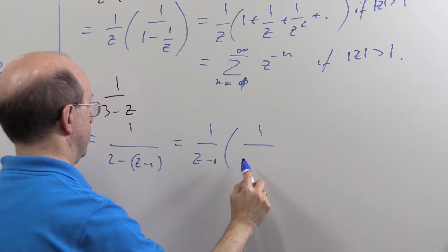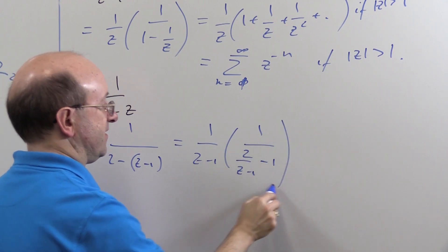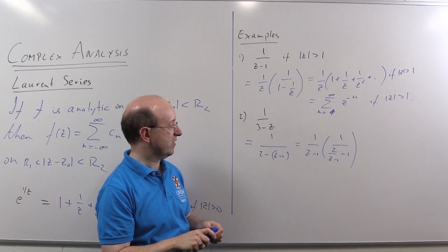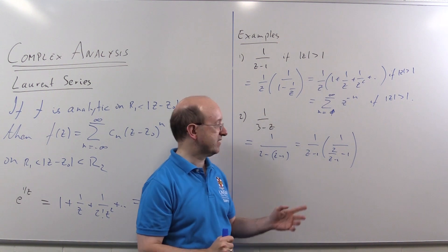Into 1 over 2 over z minus one minus one. I want to expand in powers of 2 over z minus one.